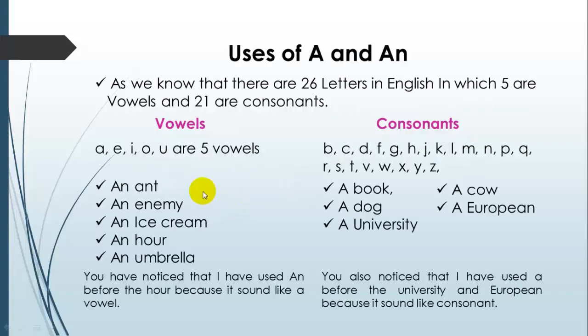Now, how will we use a and an? As we know, there are 26 letters in English in which 5 are vowels and 21 are consonants. You know well that there are 5 vowels in English: A, E, I, O, U.